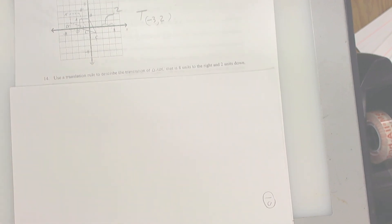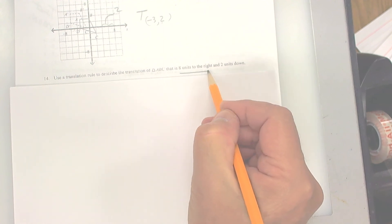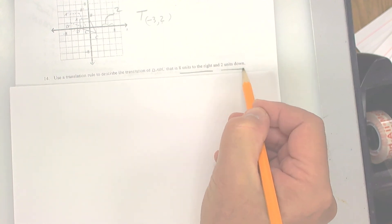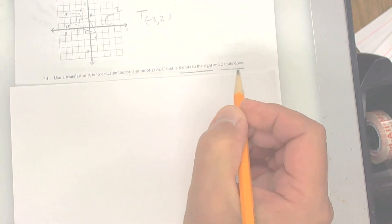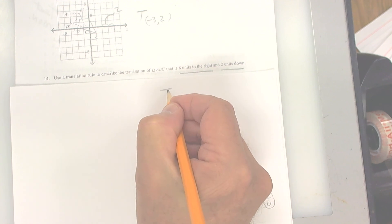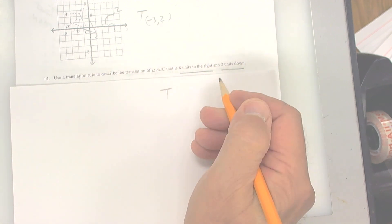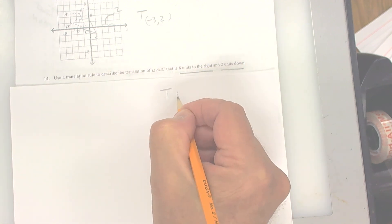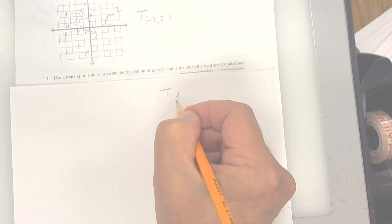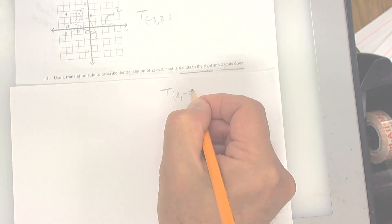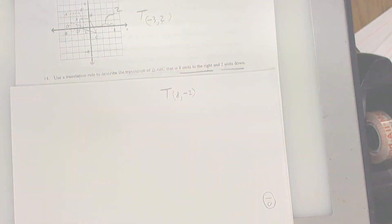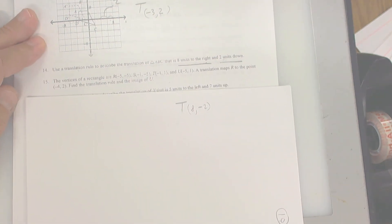Number 14: write a translation rule for 8 units to the right and 2 units down. That seems like a pretty simple one. It's going to be a translation: 8 units to the right is positive 8, and 2 units down is negative 2. Number 14 is pretty easy.